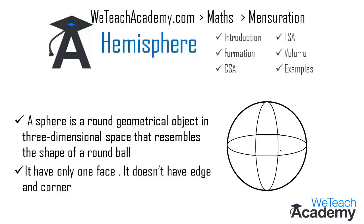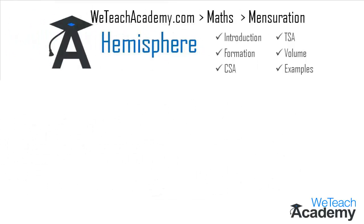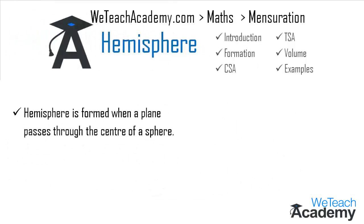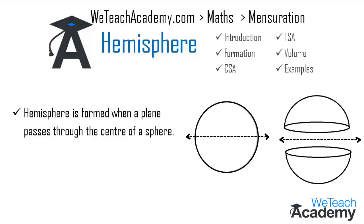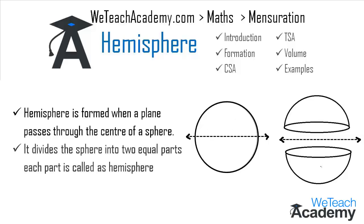Coming to the next section, we will discuss the formation of a hemisphere. A hemisphere is formed when a plane passes through the center of the sphere. This plane divides the sphere into two equal parts, and each part is called a hemisphere.